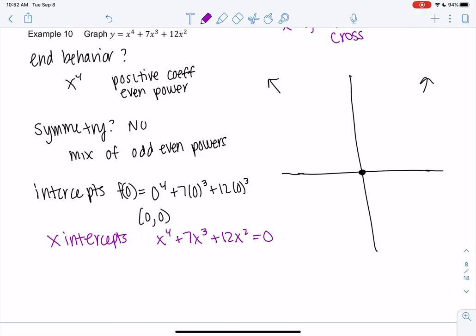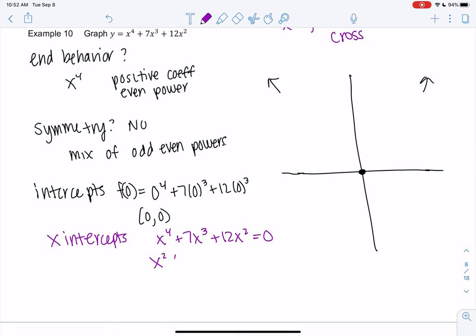So x to the fourth plus 7x cubed plus 12x squared equals zero. We get some good factoring practice. I'm going to factor out an x squared since they all have an x squared in common. And then we get x squared plus 7x plus 12 equals zero. Keep factoring. I need a product of 12 and a sum of seven. So that would be 3 and 4. So x squared, x plus 3, x plus 4 equals zero.